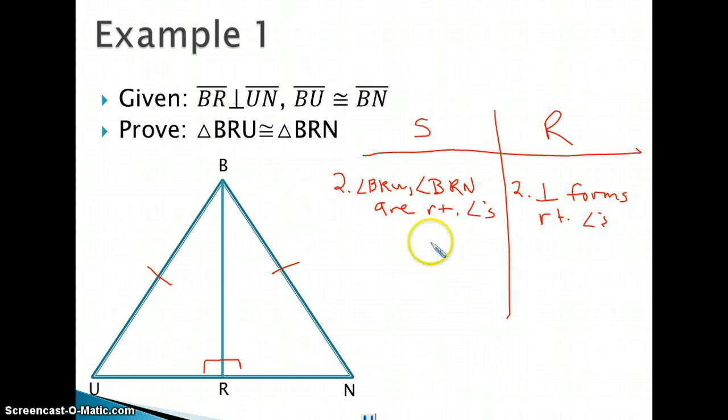Normally, in a proof, if I said that I had right angles, my next step would be to say they're congruent. But in the HL postulate, I don't actually need to do that. If I want to say that BRU is congruent to BRN because all right angles are congruent, I can do that. It's not incorrect. It's fine. It's not necessary in the proof, though.